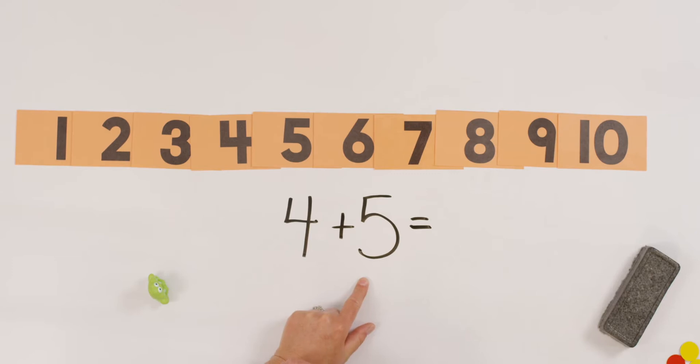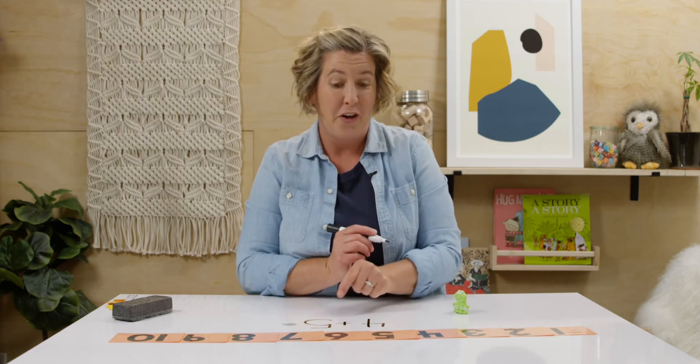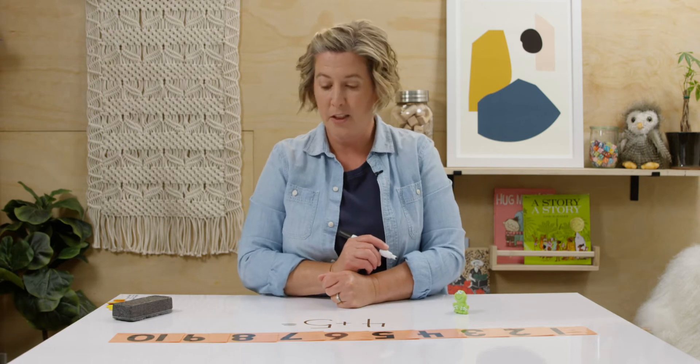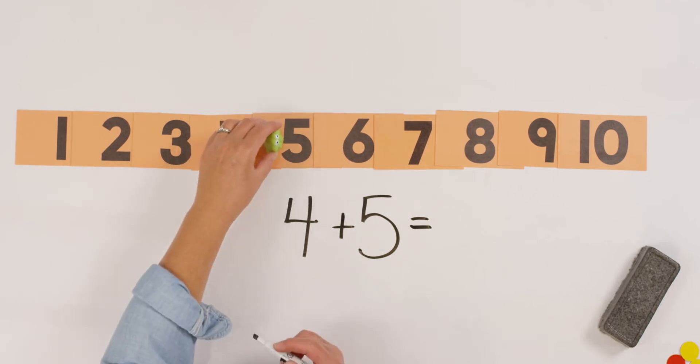The second one. But you know what? It doesn't matter. Because when we add, just like number bonds, we can go either order and still get the same answer. Or we can add either number first and still get the same answer. So let's start. What's my higher number? Five. So I'm going to put my froggy on five. And how much do I count forward?